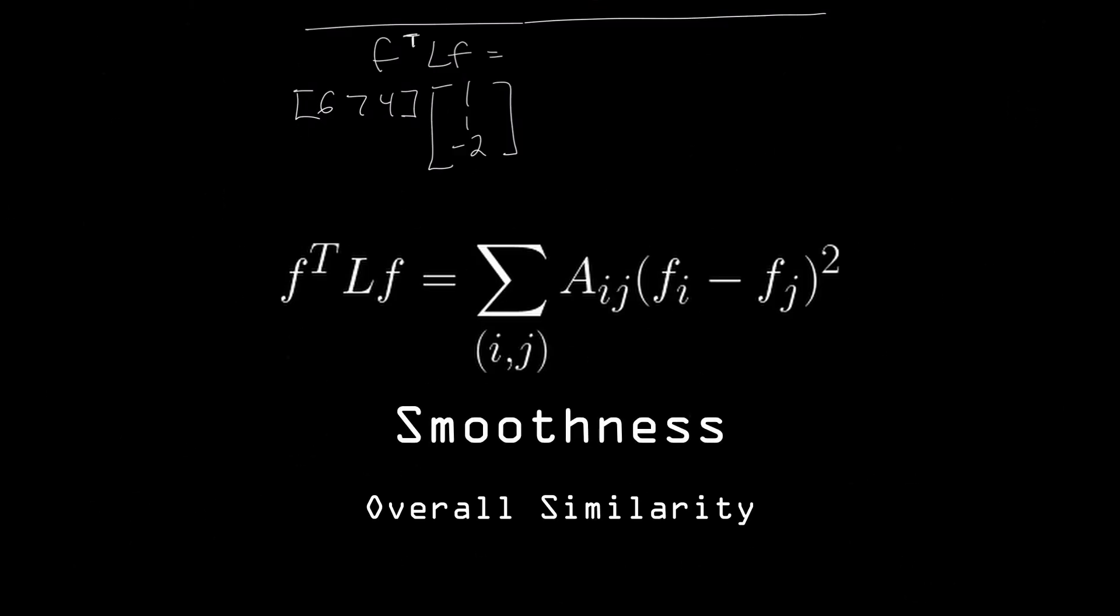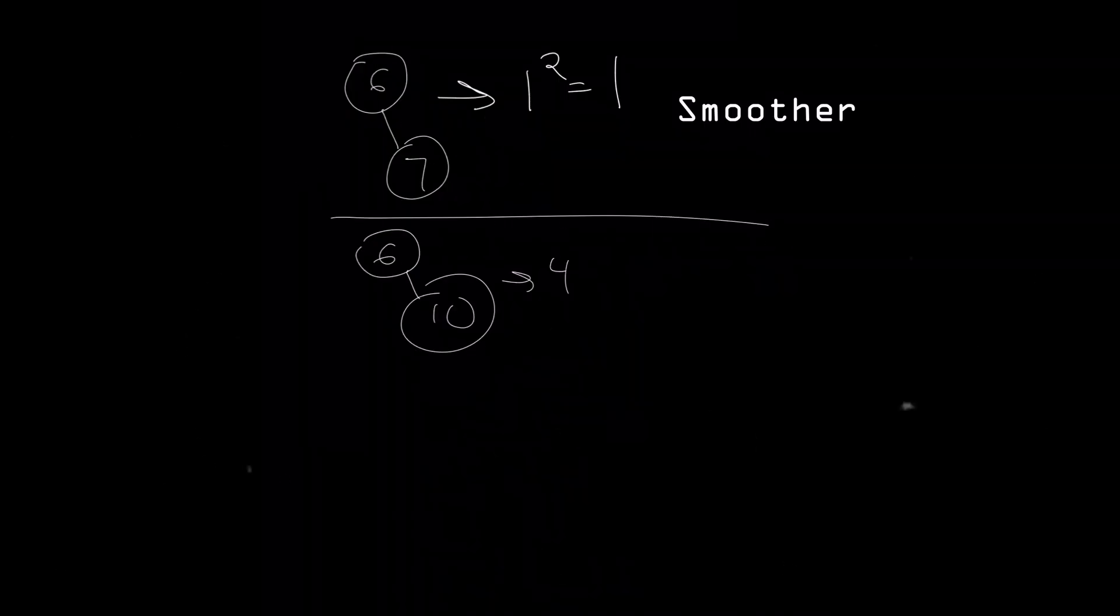We call this value the smoothness of a graph. Smoothness is the overall similarity, or variation, across nodes in the graph. When nodes are more similar in value, the graph is smoother. And when they're more different, the graph is rougher.